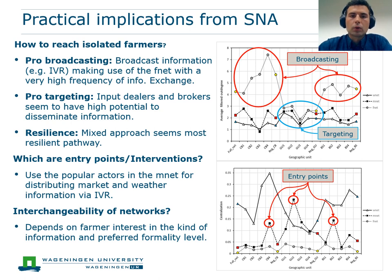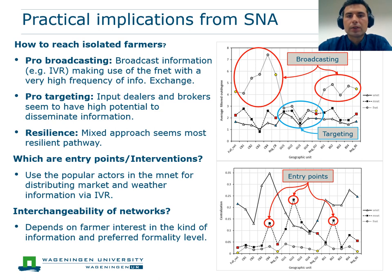When such a popular broker is removed from the system, the whole dissemination system would fall apart and is thus less resilient than in the broadcasting or mixed approach. With regards to interchangeability of networks, the practical question is whether we can use the powerful brokers — strong information senders from the market information network — to also disseminate weather information, thus using the different networks interchangeably. Based on the results, we consider two aspects worth discussing. According to our study, almost all farmers indicated being interested in receiving more weather information.